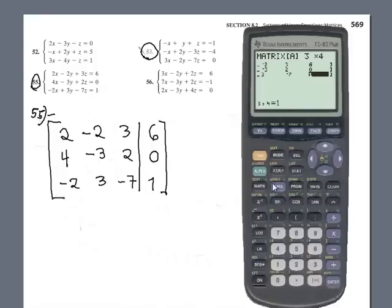Ok, finish the edition. Let's go to the home screen, second mode. Second matrix again and checking matrix A, see if everything is ok or no. 2, negative 2, 3, 6, 4, negative 3, 2, 0, negative 2, 3, negative 7, 1. Great.